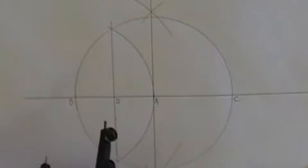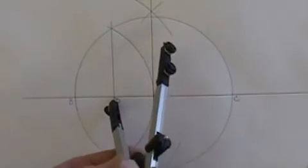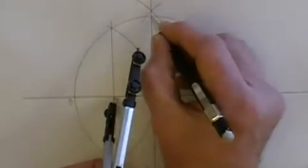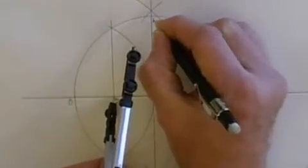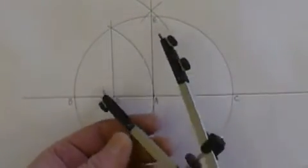Now take your compass, set it at point D, and where this perpendicular line intersected the top, let's label that point E. Set your compass from D to E.